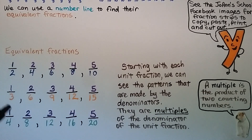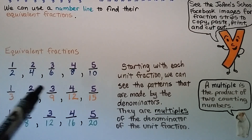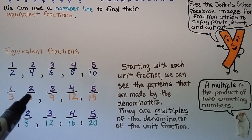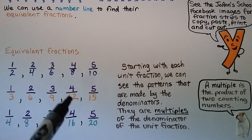Same thing with one-third. The numerators go one, two, three, four, five, but look at the denominators — they're multiples of three: three, six, nine, twelve, fifteen.